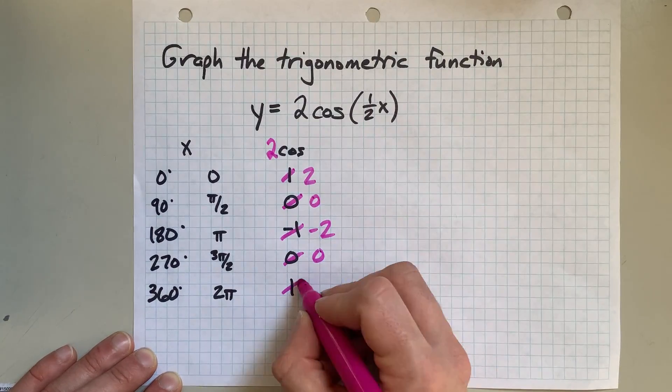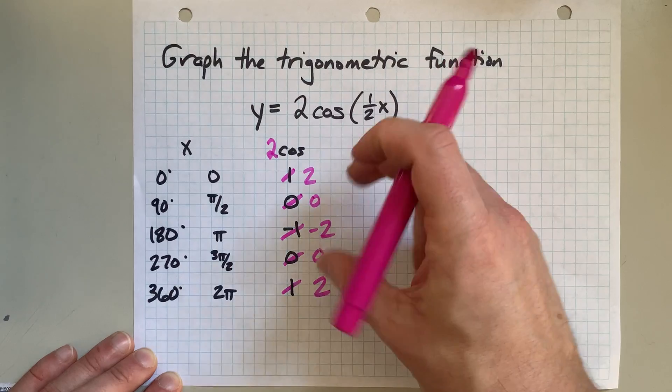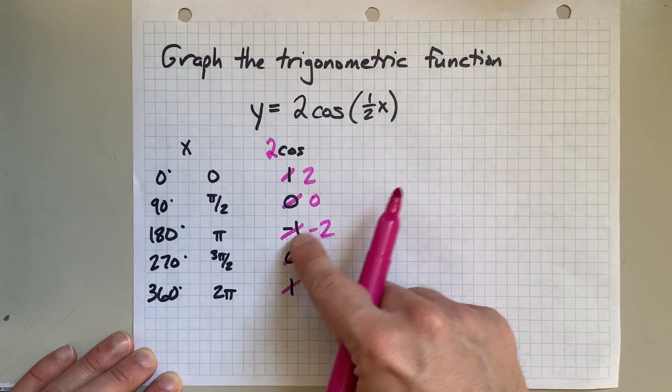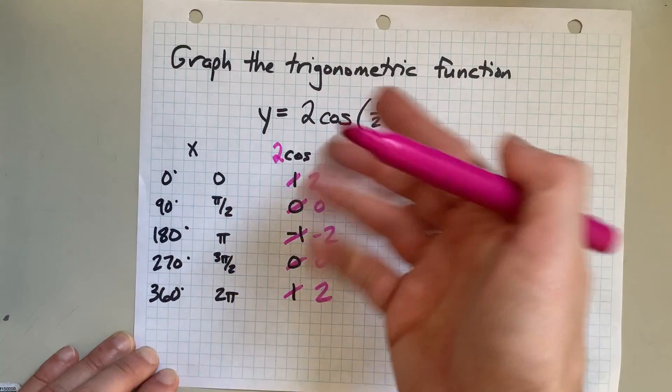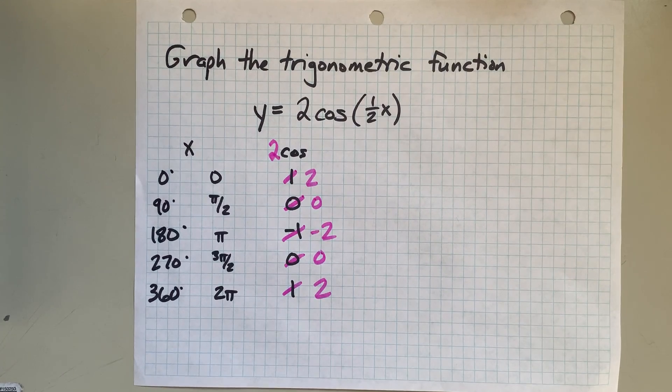So take a look. The numbers we get as our y values here are twice as large. We go twice as low and twice as high. Because we're stretching by a factor of 2 vertically.